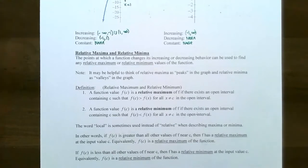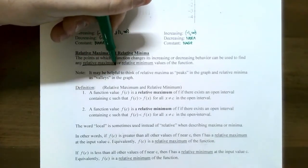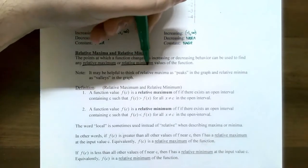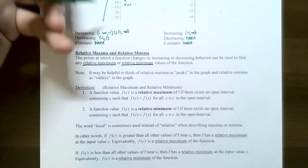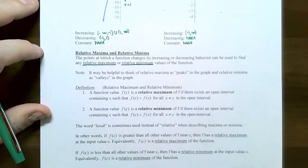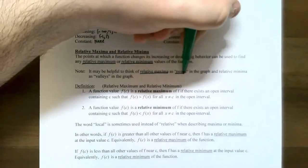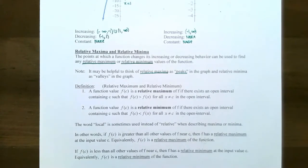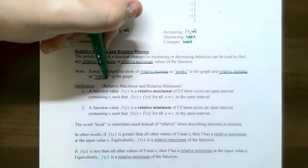Relative maximum and relative minimum. These are points we saw with the gas guzzler graph — where the graph might change from increasing to decreasing or decreasing to increasing. Where the graph changes, you might have a relative maximum or a relative minimum. The plural is relative maxima and relative minima. Sometimes people call these local maximum and local minimum. Relative maxima are the peaks in the graph — the top of a hill — and relative minima are the bottom of a valley.